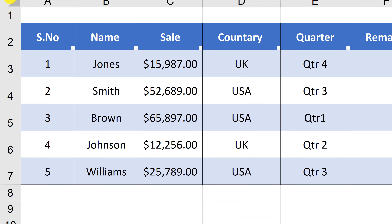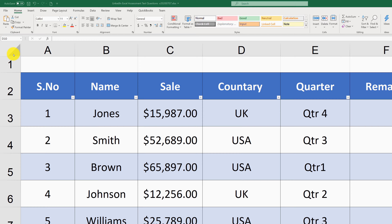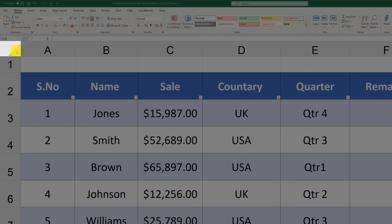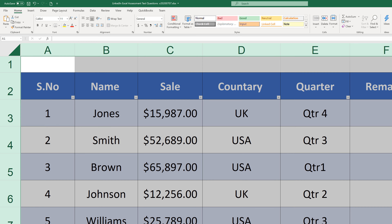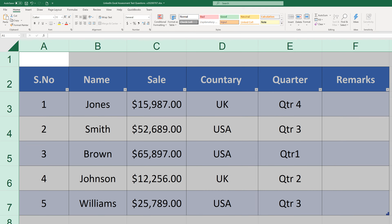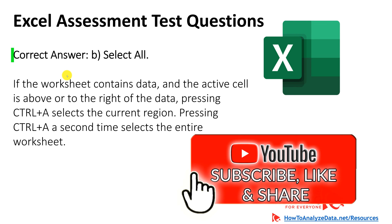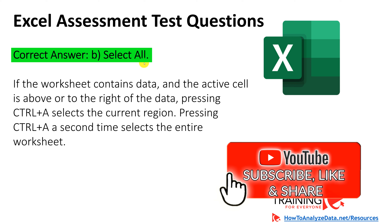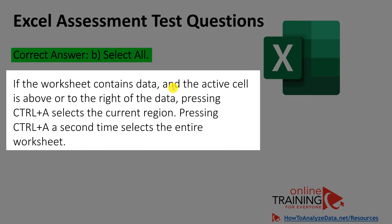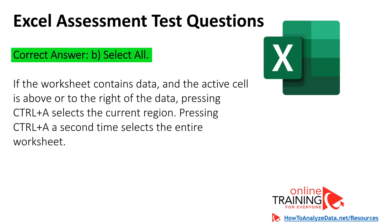If you click the area in the upper left corner of the Microsoft Excel worksheet, it is equivalent to the select all function — when you click on it, it selects the entire worksheet. If the worksheet contains data and the active cell is above or to the right of the data, pressing Ctrl-A selects the current region, and this button is equivalent to Ctrl-A. The correct answer is select all.